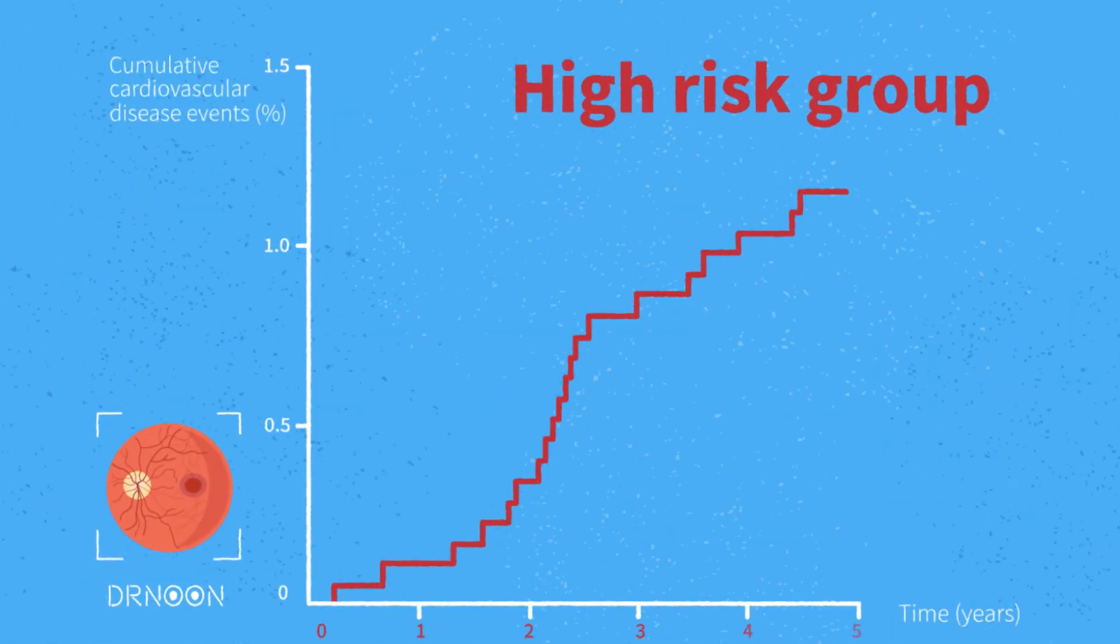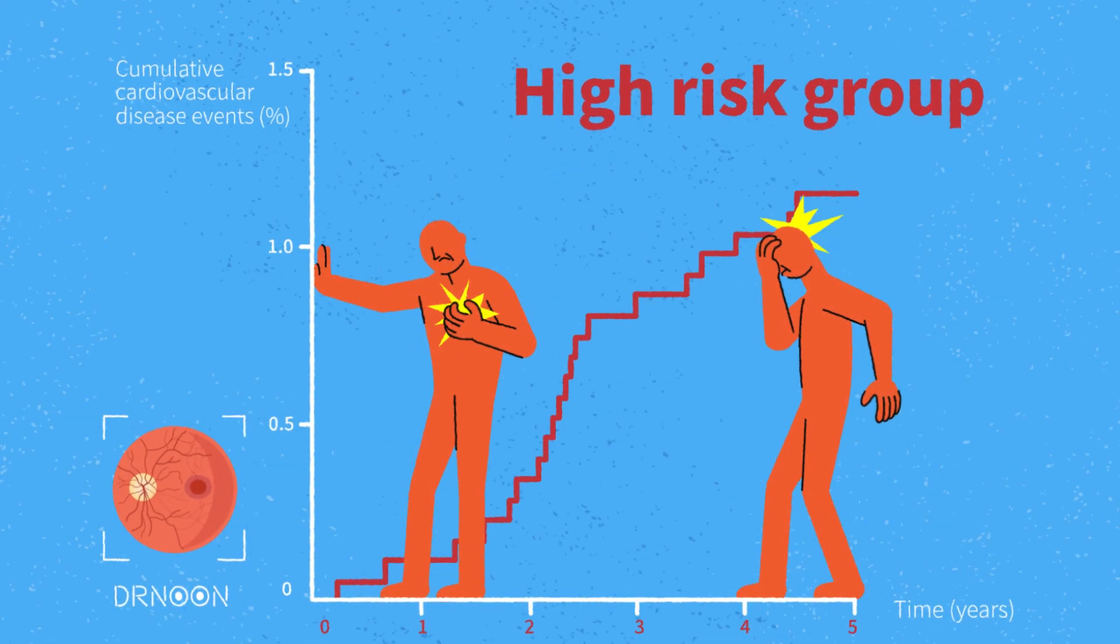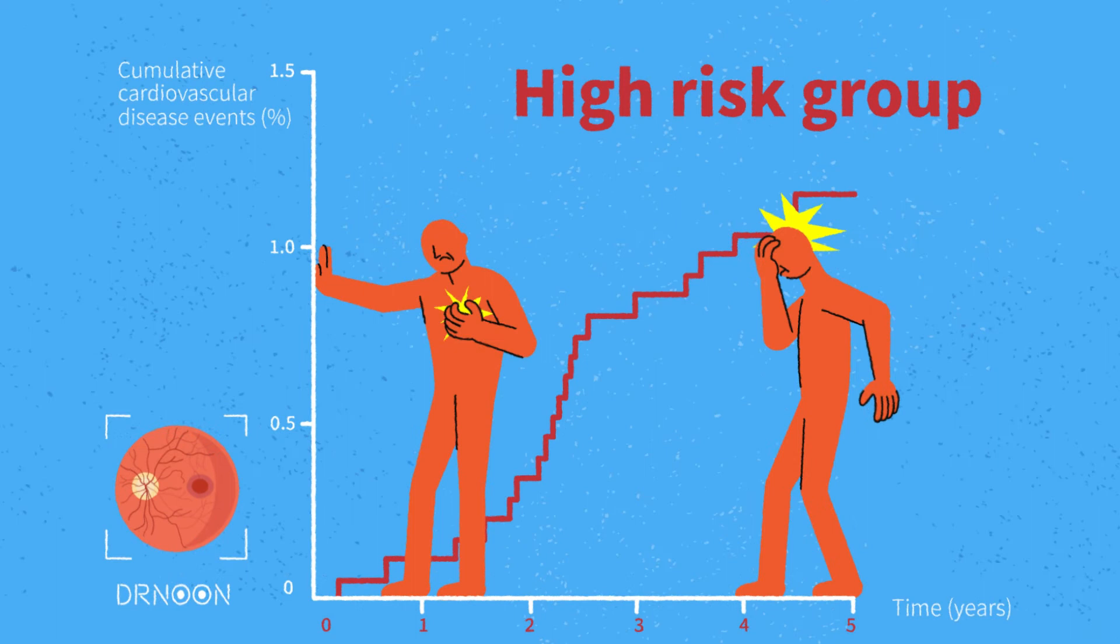For example, Dr. Noon AI-predicted high-risk group has been shown to have far more cardiovascular disease events within a five-year period.